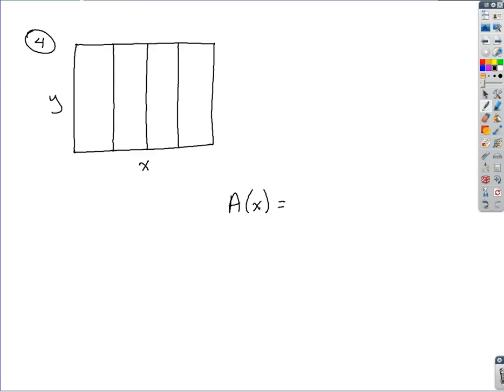All right, so we assign the variables. We know area is base times height. If base is x, height is y, our area function is going to be x times y. We don't want a function in terms of two variables. So this is where having another equation comes into play.